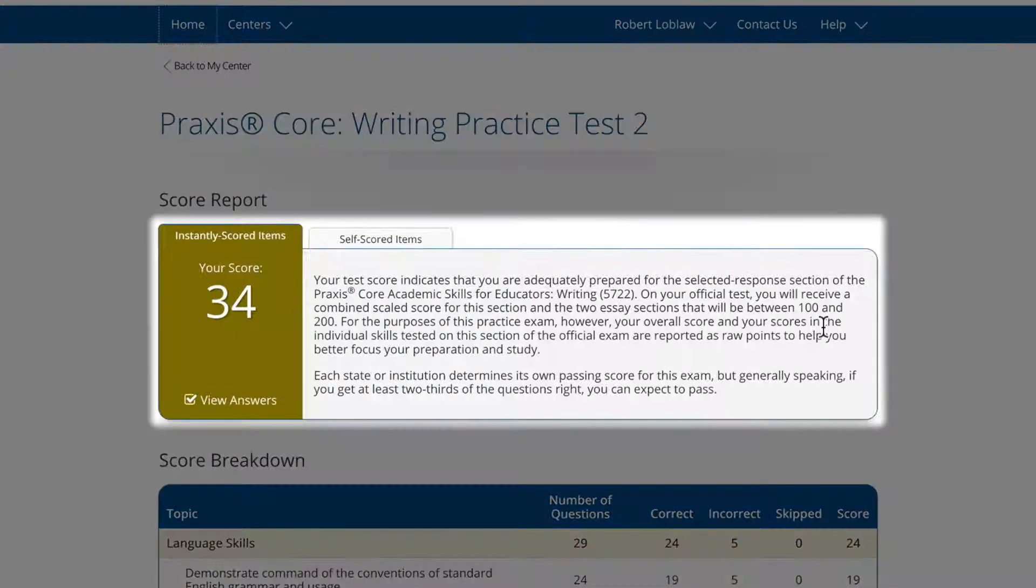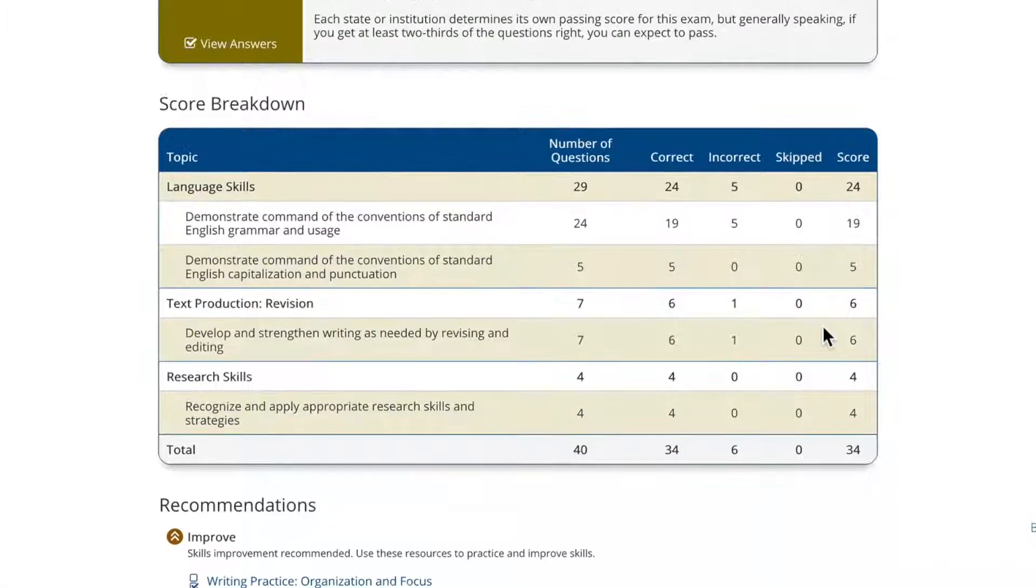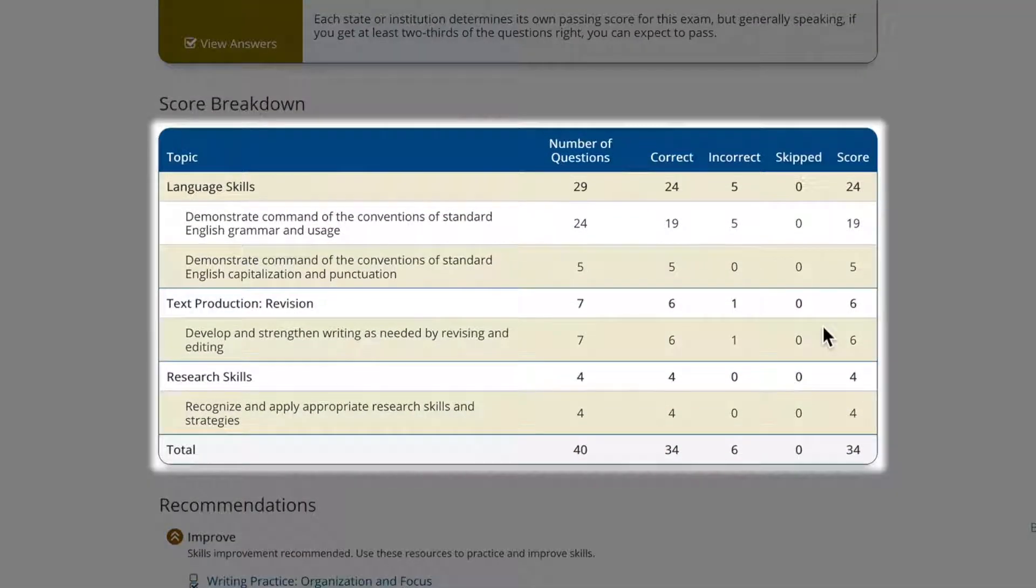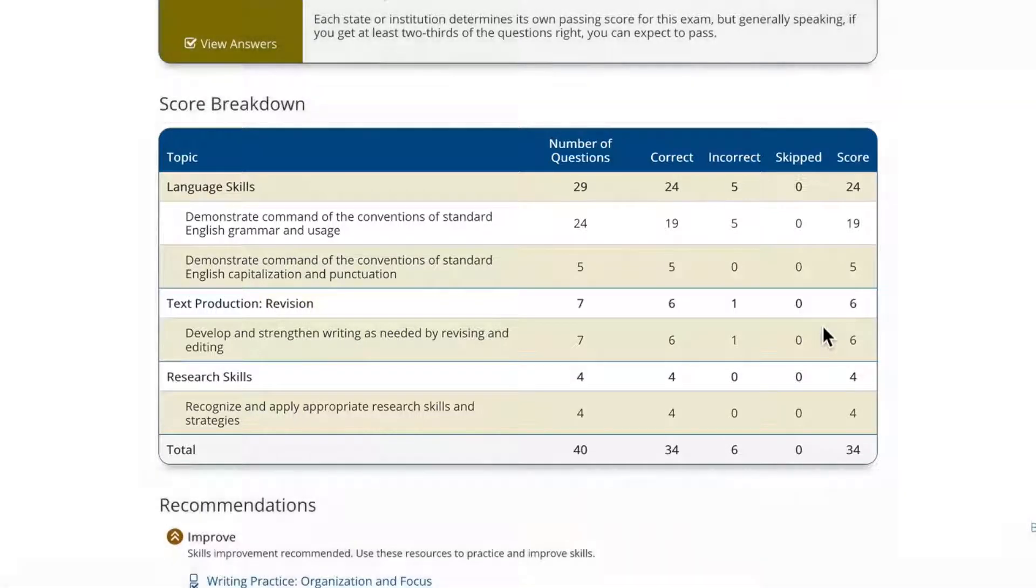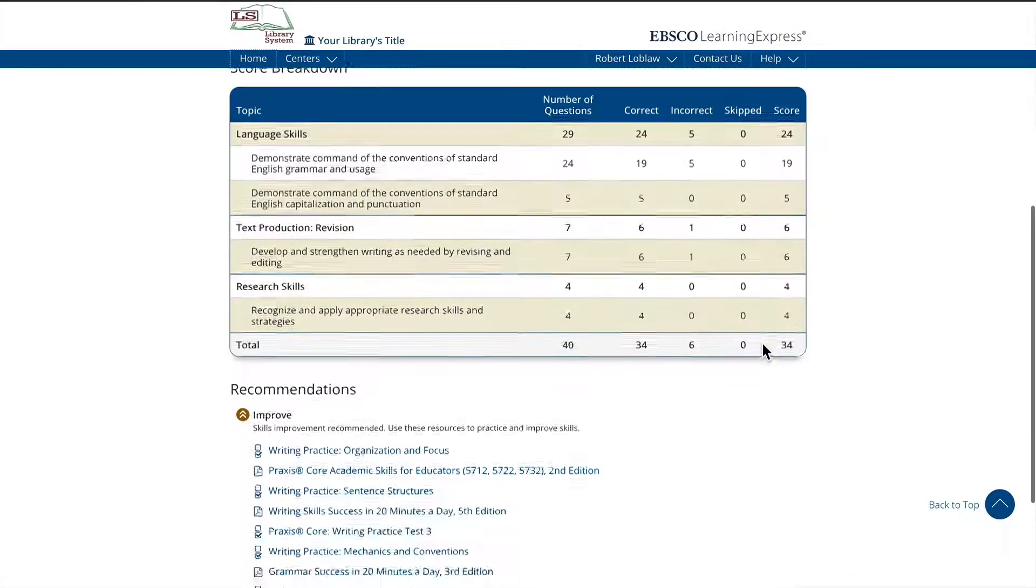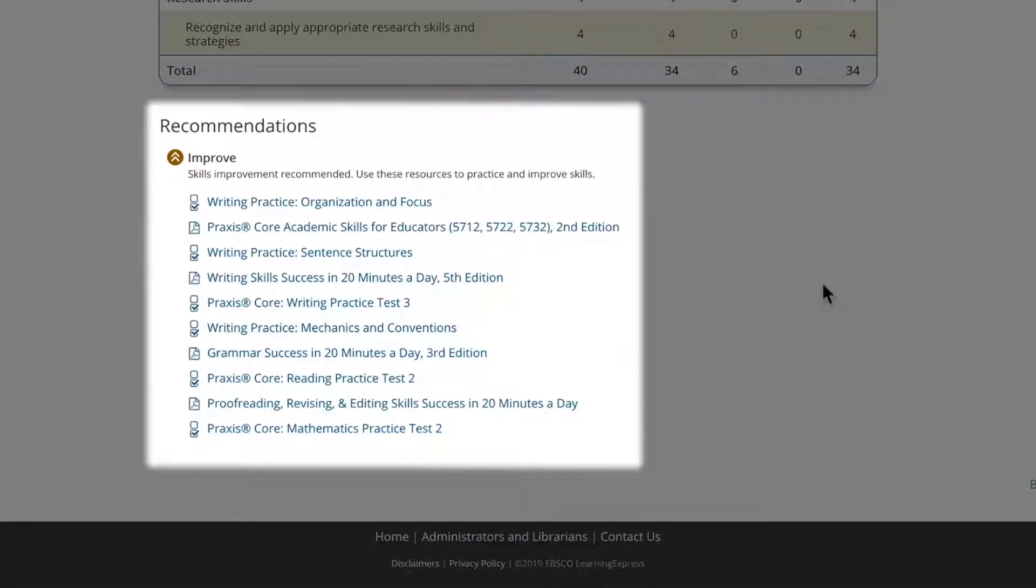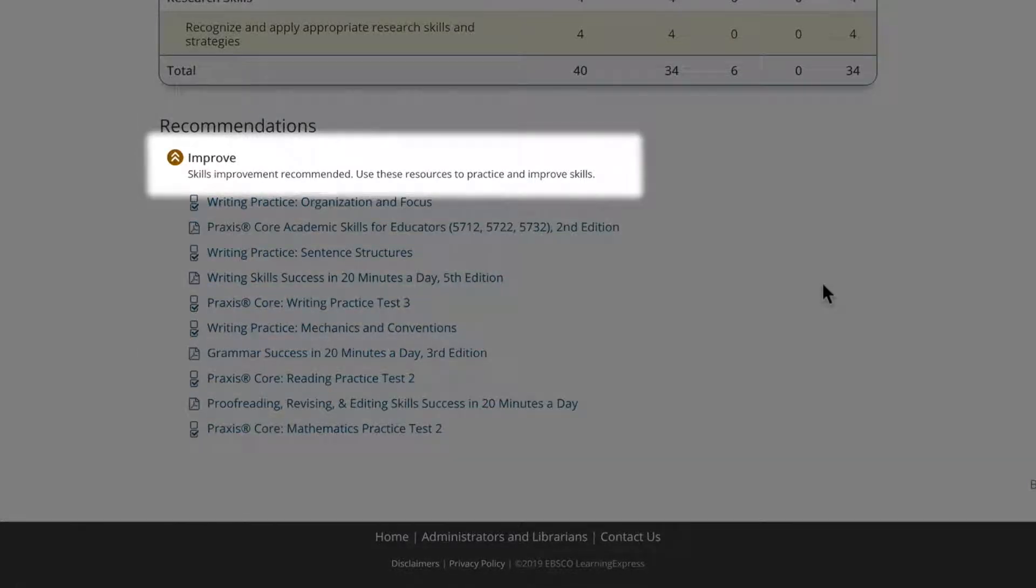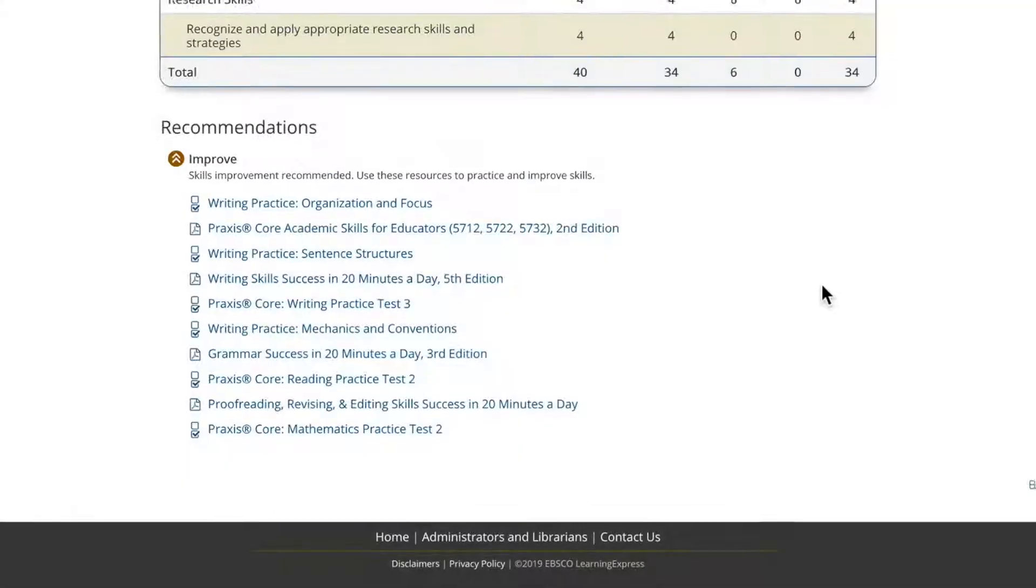The Score Report will display your total score and a breakdown of the scores by subject area or topic. You can use this information to identify your areas of strength and weakness. You may also see additional recommendations based on your test scores. Use the key to help you determine why these resources were recommended for you.